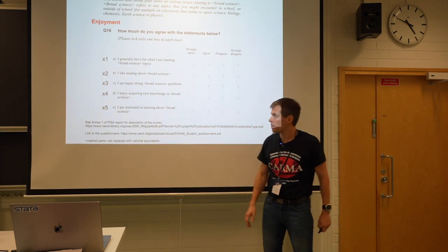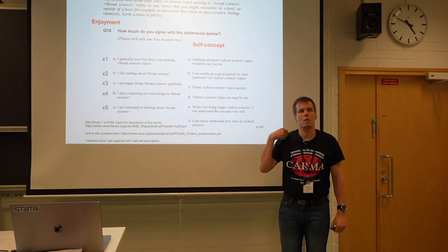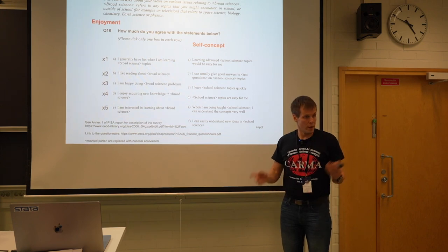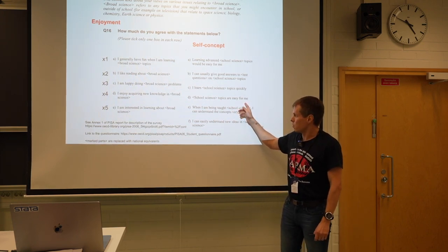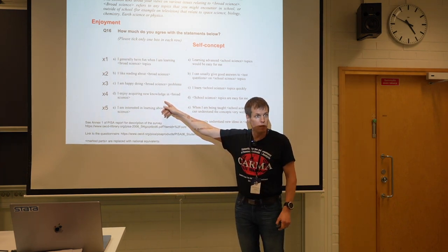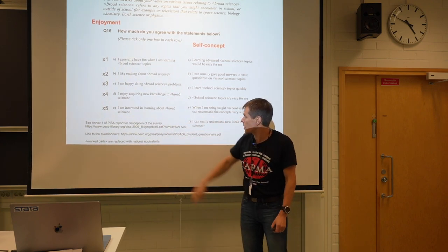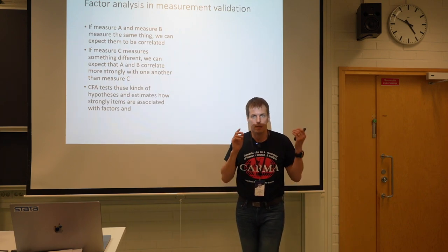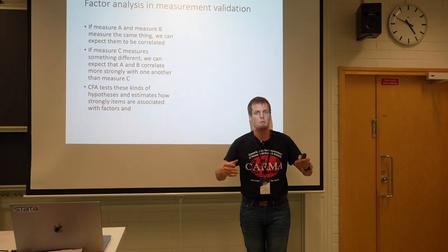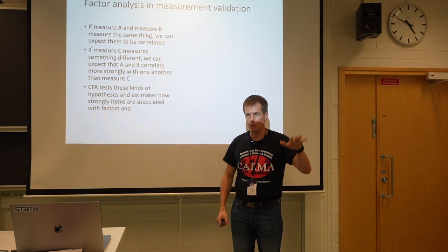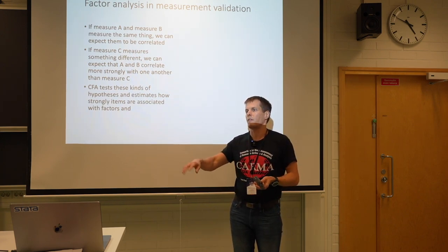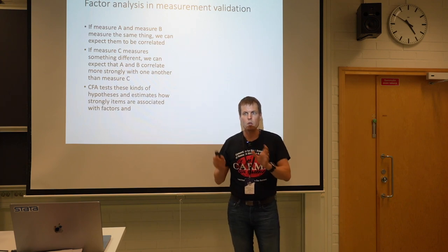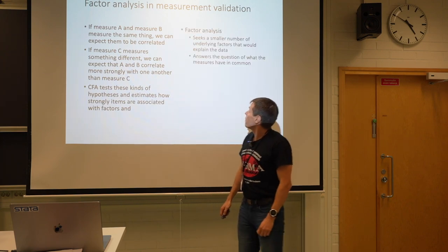Do these items correlate highly enough for us to say they measure the same thing? There's also a self-concept scale measuring how much a person thinks they know science. We expect 'school science topics are easy for me' to correlate with 'I enjoy acquiring new knowledge in science,' but less so than items within the same scale. Factor analysis lets us test this kind of hypothesis — do the pattern of correlations support the idea that variables in one set measure one distinct thing?